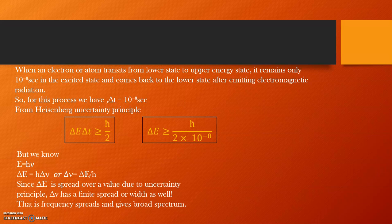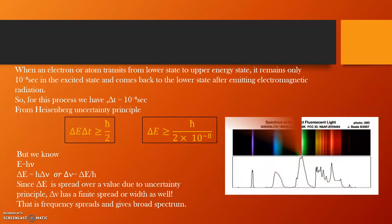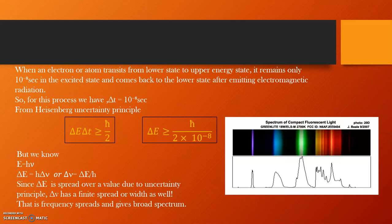Now, if the energy has a certain spread and as energy is equal to the product of Planck's constant and frequency, the frequency also appears with a spread now. That is, since delta E is a spread over a value due to uncertainty principle, the frequency also has a finite spread or width and hence the frequency spreads and gives a broad spectrum. So, instead of spectral lines being single crisp lines, we find them to be spread over a range or width as seen in this picture.